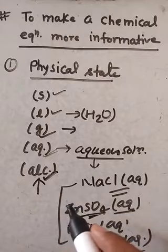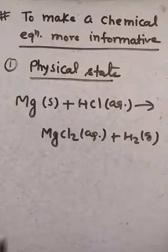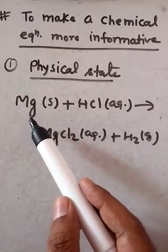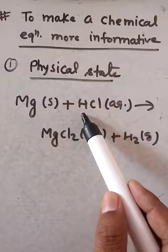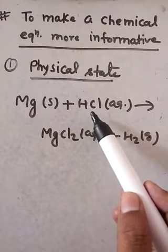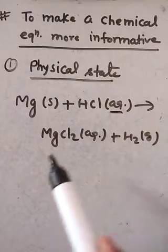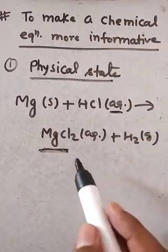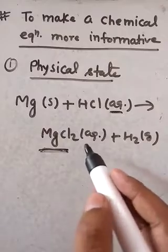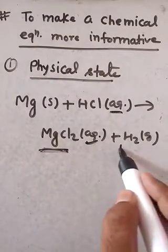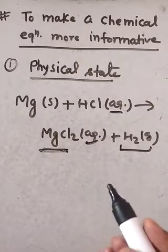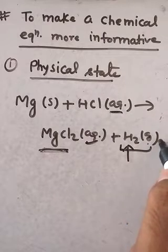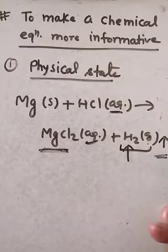For example, magnesium is in solid state at room temperature so we use '(s)' after its formula. In the product side, if a substance is in aqueous solution we use '(aq)'. Hydrogen evolved during the reaction is a gas, so we use '(g)'. We can also use an upward arrow to represent a gaseous substance produced in a reaction.